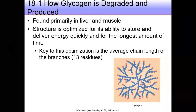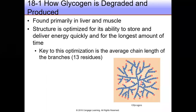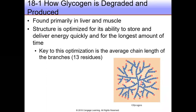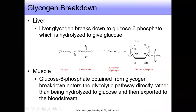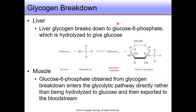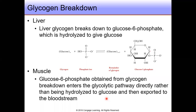Glycogen is found mainly in the liver and muscle. The release of glycogen stored in the liver is triggered by low levels of glucose in the blood. Liver glycogen breaks down to glucose 1-phosphate, and then is hydrolyzed to give glucose. The release of glucose from the liver by this breakdown of glycogen replenishes the supply of glucose in the blood. However, in muscle, glucose 1-phosphate obtained from glycogen breakdown enters the glycolytic pathway, rather than being hydrolyzed to glucose and exported to the bloodstream.